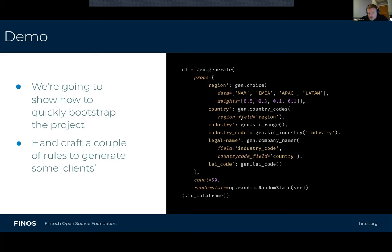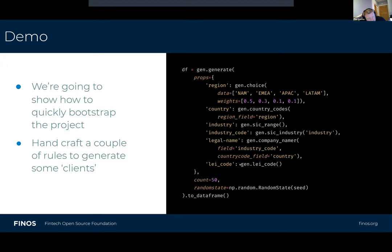You can say: give me a country based on the region field, and it will select countries appropriate to the region. Then specify an industry — retail, banking, finance, agriculture, whatever — and generate a very specific industry code based on that industry. Then generate a legal name appropriate for that record — something like 'ABC Mining Company Limited'. There's a lot of work in here where we generate appropriate names synthetically based on the industry and country. Then generate an LEI code or other identifiers like ISIN using various functions. It's all in Python and very easy to extend.